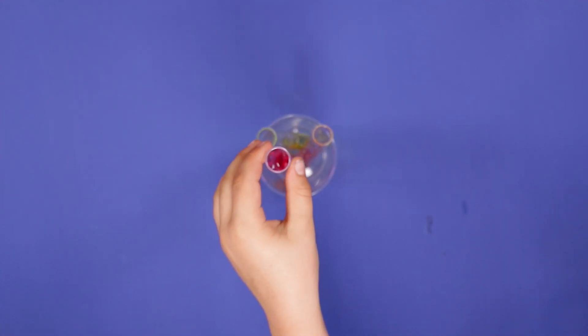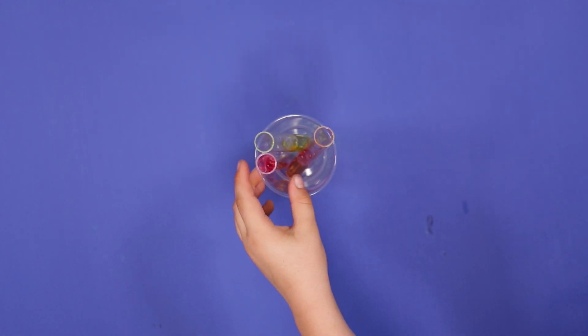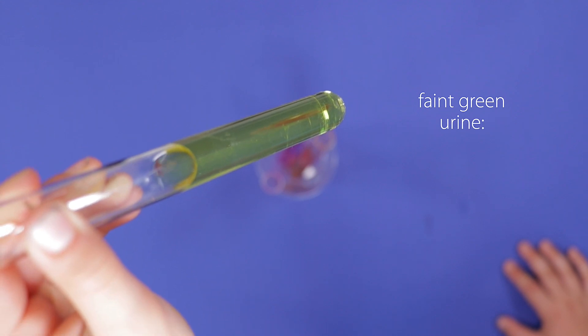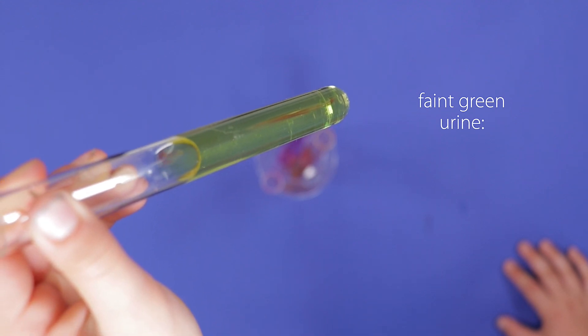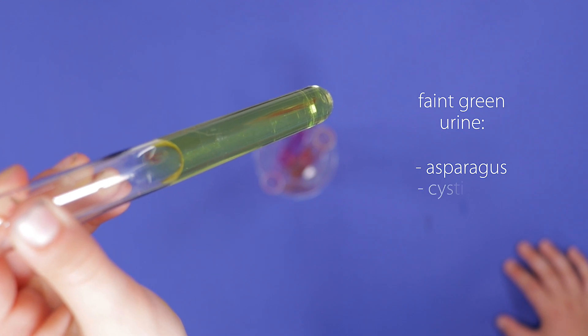Here we're looking at the colour of the urine itself. For example, sometimes it's completely harmless. A green colour to your urine could be because of something that you've eaten earlier such as asparagus or something requiring medication such as cystitis.